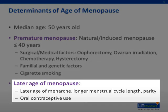Factors causing a later age of menopause include a later age of menarche, a longer menstrual cycle length, increased parity, and oral contraceptive usage.